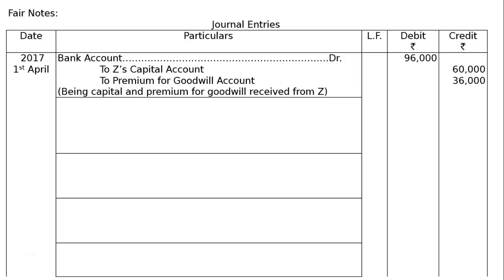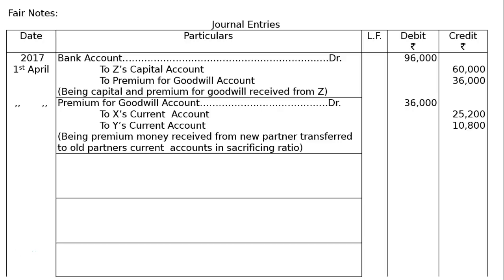Second journal entry: premium for goodwill account debited Rs. 36,000. Premium for goodwill is first credited, then debited for transfer to current accounts — to X's current account Rs. 25,200 and to Y's current account Rs. 10,800. Narration: bank premium money received from new partner, transferred to old partners' current accounts in sacrificing ratio.